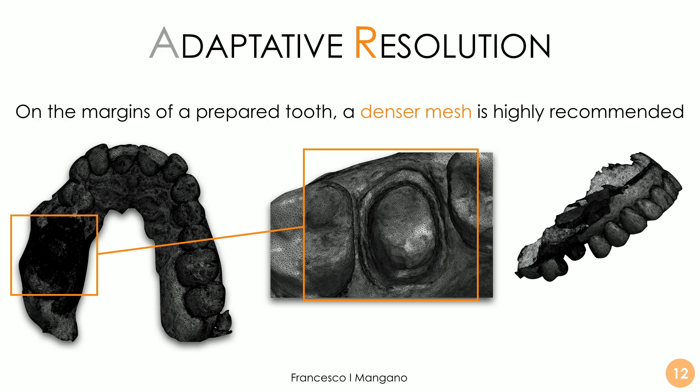For a prepared tooth, we need to see the margin better. It is already a difficult location for the scanner, because we are usually juxta-gingival, so the light may have trouble reaching there and we don't have many angles for the light to reach the prepared tooth surface. It is highly recommended to have a dense mesh there to gather and transfer more information to the dental technician.